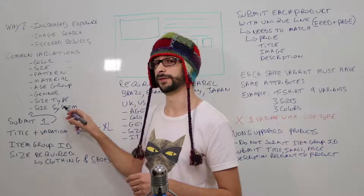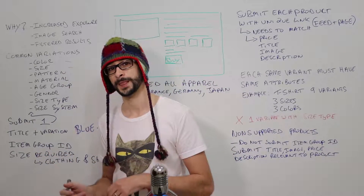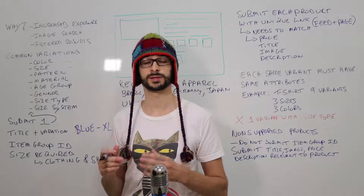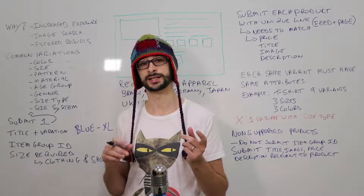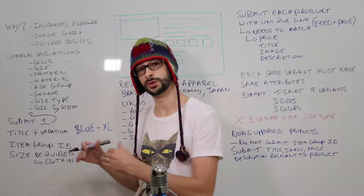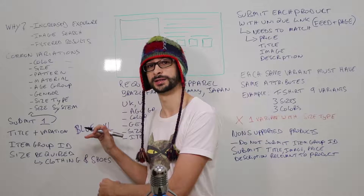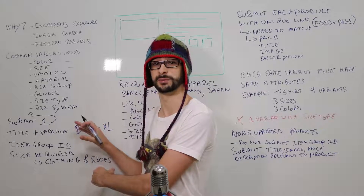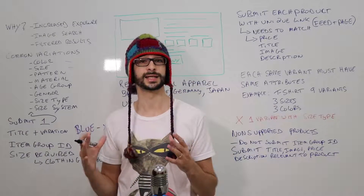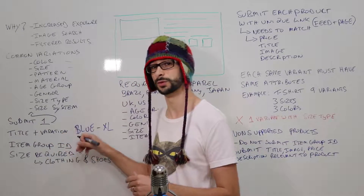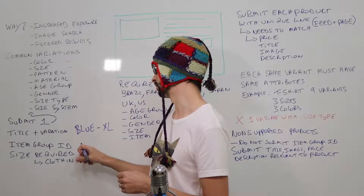When submitting variants it is also important that you submit the item group ID. If you have one parent product with a specific ID, use that ID for all the variants, because all variants of that one product need to have the exact same item group ID. The product ID can be different, but the item group ID has to be the same for all of them.